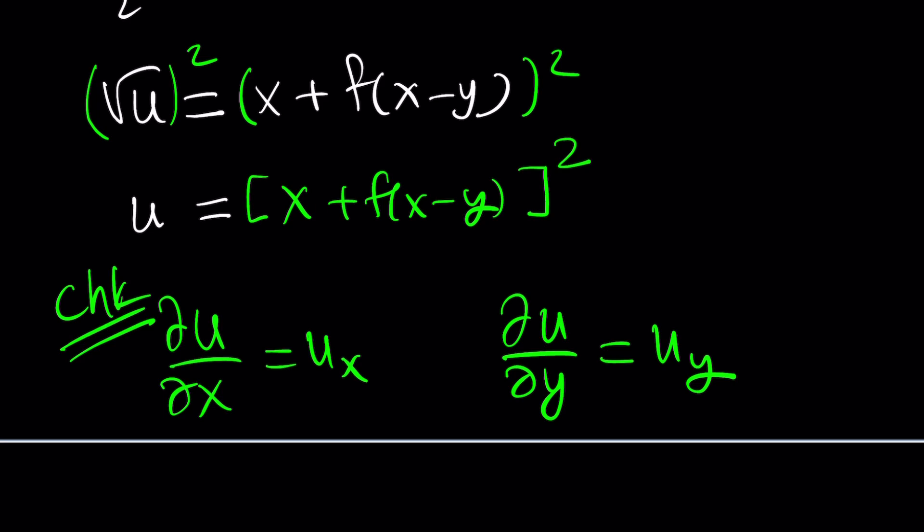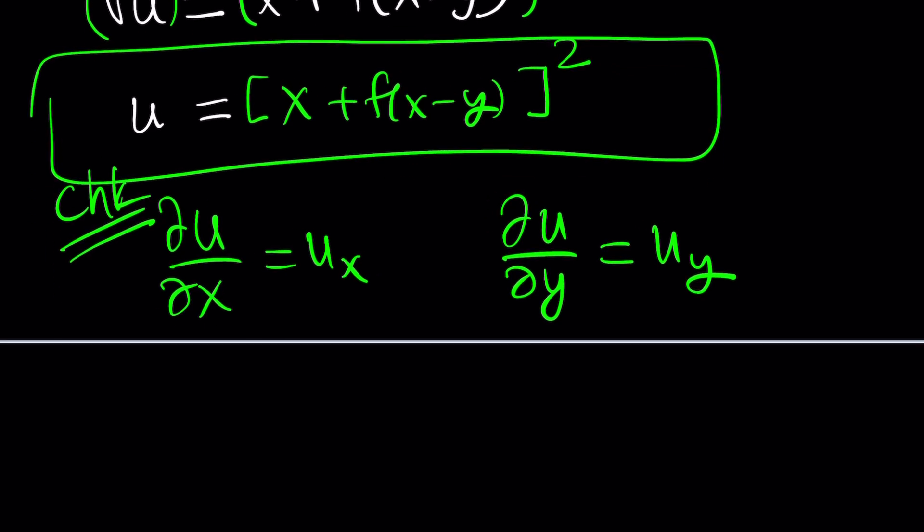So, from here, if u is this, what is u sub x, the partial derivative, right? When you take the partial derivative, other variables are considered constants. For example, y is going to be a constant in this case. So, derivative of x is 1 plus the function is just differentiated on the outside, multiply by the inside. It's the chain rule, remember? The derivative of x minus y. But y is a constant, so we're only going to differentiate x, which is 1. Good, easy, right?